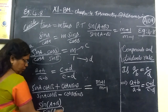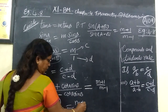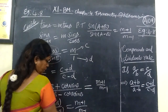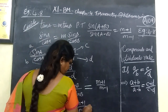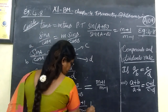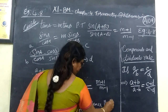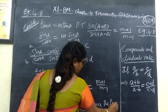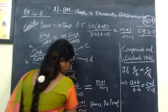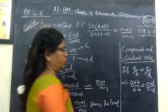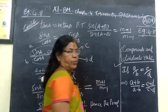Sin(a+b) by sin(a-b) is equal to (m+1) by (m-1). Hence the proof is complete. This is a very easy problem using the componendo and dividendo rule.